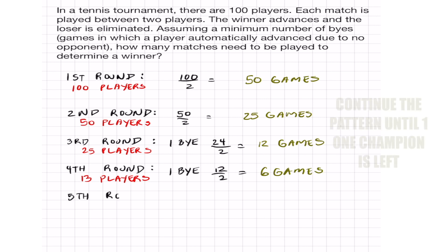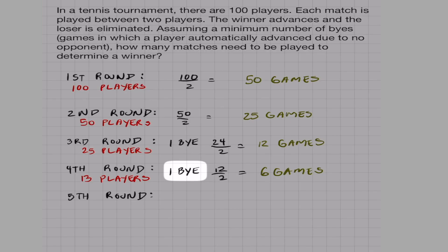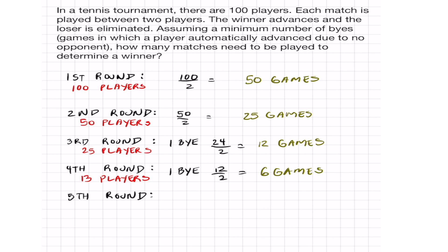So we're almost at the end. In the fifth round, count how many people we have left. Well, we got one person that escaped through a bye, and 6 people got eliminated from 6 games. So we got 7 players left. And anytime I get an odd amount of players, that means I have to have one bye, meaning 6 players have to play divided by 2, which equals 3 games.